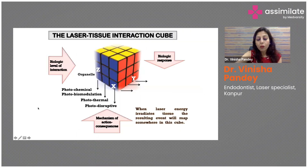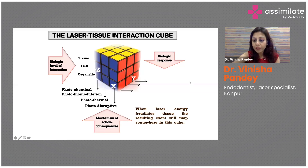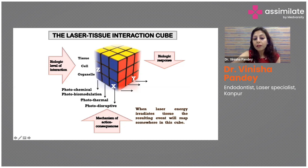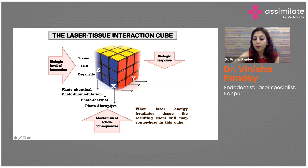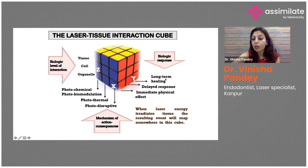Laser tissue interaction is needed because we require certain effects. Laser can act on tissue cells and organelles at the biologic level. The mechanisms of action and consequences can be a photochemical effect, a photobiomodulating effect, a photothermal effect, or a photodisruptive effect. From these, you can get three biological responses: long-term healing, a delayed response, or an immediate physical effect.